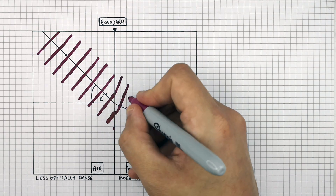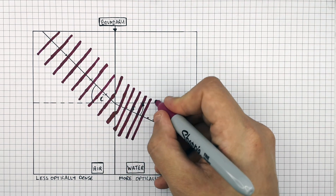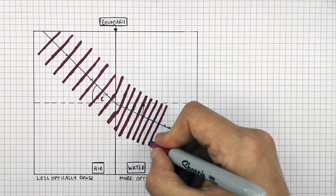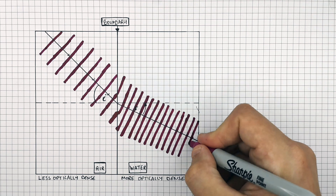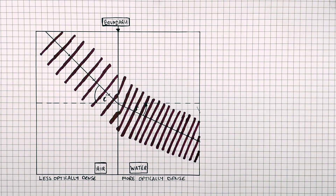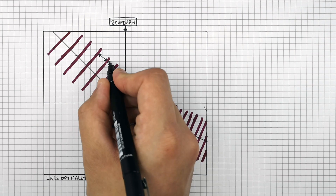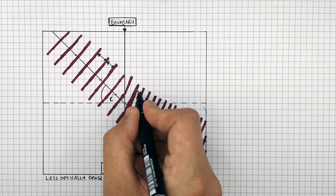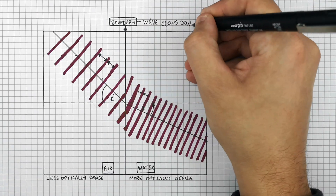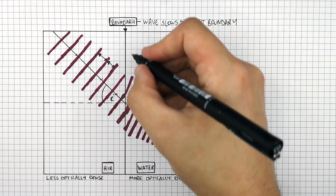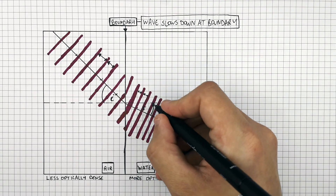In a more optically dense material, the wavefronts are going to be closer together. I'm drawing the wavefronts closer together because the wavelengths are shorter in a more optically dense material like water. So the wavefronts are further apart in air than they are in water. The wave slows down at the boundary as it crosses from air into water, and it bends towards the normal.